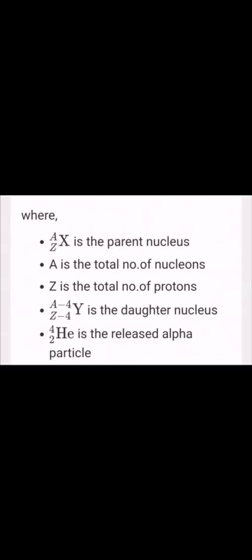This is the equation for alpha decay, where X is the parent nucleus, A is the total number of nucleons, Z is the total number of protons, Y is the daughter nucleus, and helium is the released alpha particle.